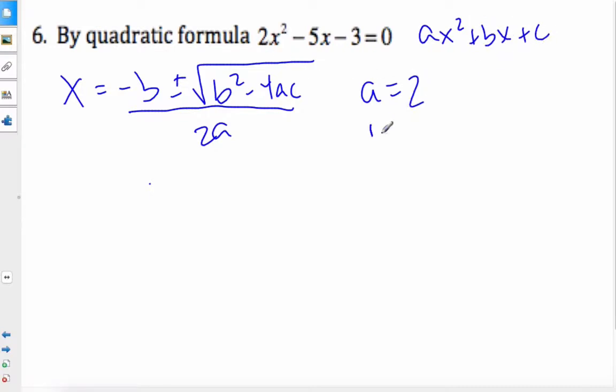So a is 2, b equals negative 5, and c equals negative 3. So using the quadratic formula, we're going to plug it in.